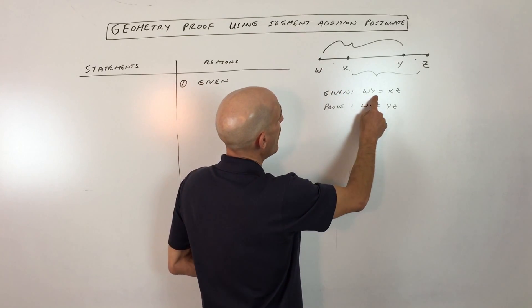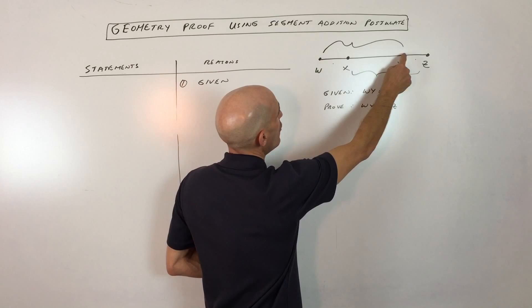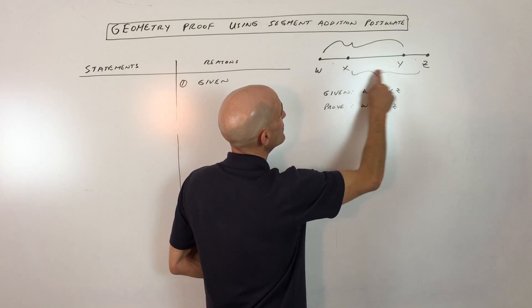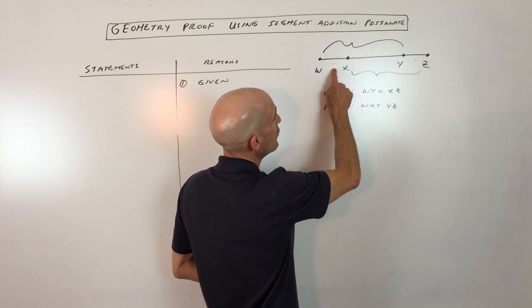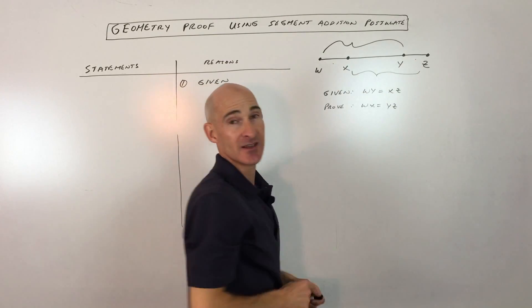We have that WY equals XZ. So that means this whole length here is equal to this whole length here. But what we want to prove is that WX is equal to YZ.